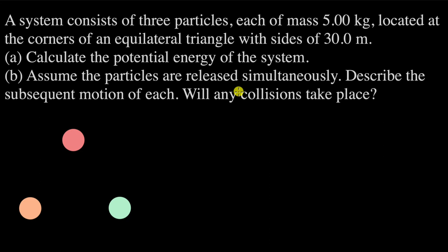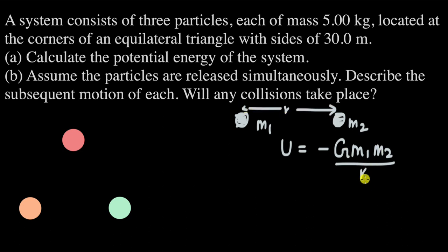Before I get into this, pause the video and attempt this on your own. Okay, hopefully you've given this a shot. Now, the potential energy of a system—let's say if we had 2 particles, this is of mass m1 and this is of mass m2. The gravitational potential energy of this system is given by U = -G m1 m2 / R, where R is the distance between their centers.